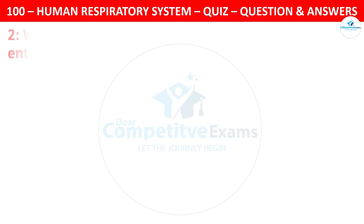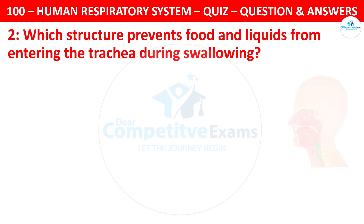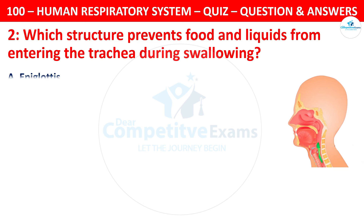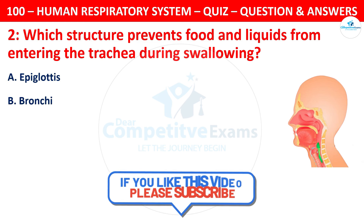Which structure prevents food and liquids from entering the trachea during swallowing? Your options are: epiglottis, bronchi, alveoli, or diaphragm.